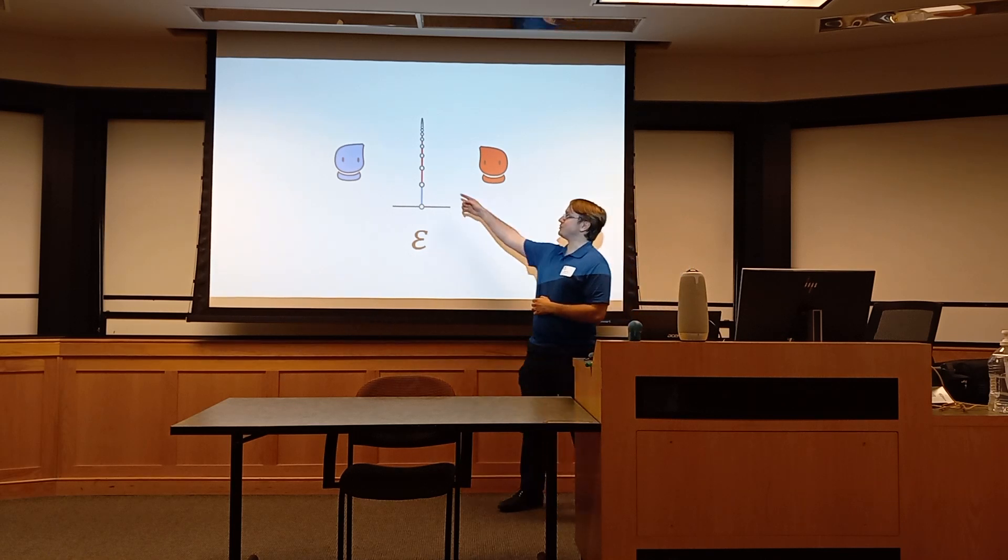You can also take the reciprocal of omega. This number is called epsilon, 1 divided by omega. This is the unit infinitesimal number. As you can see, it's extremely small because red has a pretty big advantage, but only after blue's turn. It's obvious that blue's going to win. This is a positive number, but it's smaller than any real number.